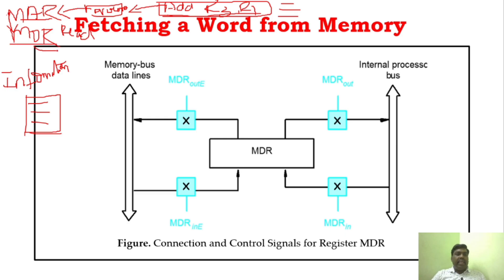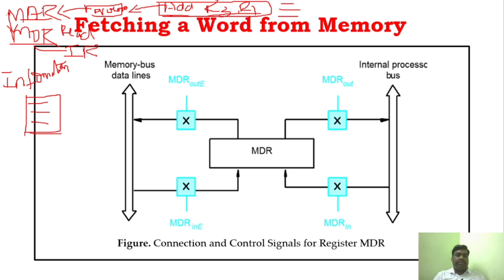From MDR, the instruction reaches the IR — instruction register. Once it reaches the IR, the fetch phase is complete and the execution phase will start.